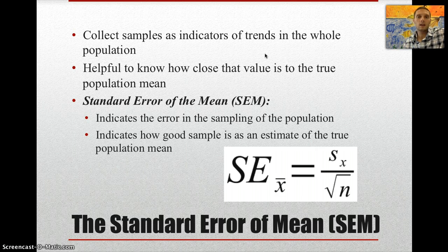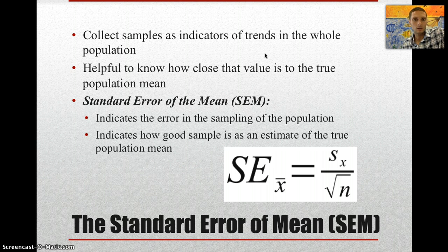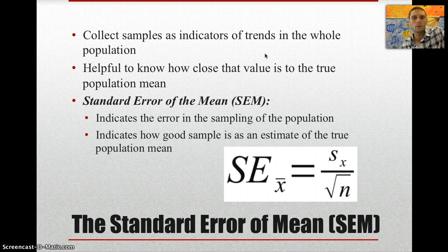In order to calculate how reliable the mean value is, we need the standard deviation, and we can use something called the standard error of the mean. Samples are collected as indicators of trends in the entire population, and it's helpful to know how close a sample value is to the true population mean. For example, if we've surveyed our class on height, we want to see how close that average is to the true average, since there could be variance based on sampling. Standard error of the mean helps calculate that — it indicates the error in sampling and how good a sample is as an estimate of the true population mean.